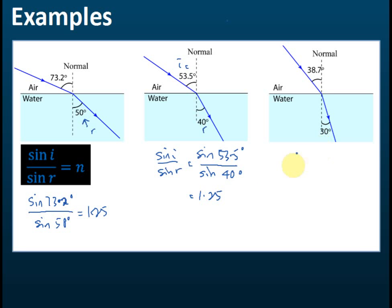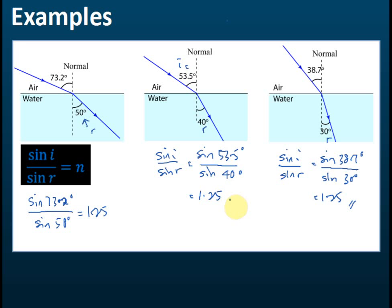For the third example, sine i over sine r equals sine 38.7 degrees divided by sine 30 degrees, and you'll find this also equals 1.25. So no matter how you change the angles of incidence, if you take sine i divided by sine r, you will always get the same number: 1.25.